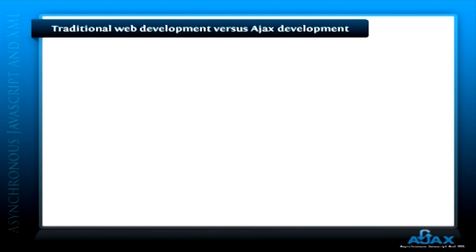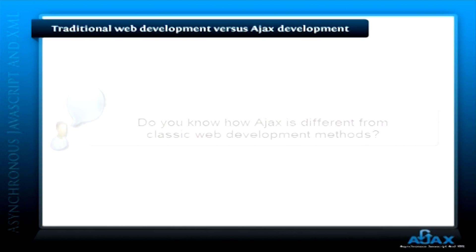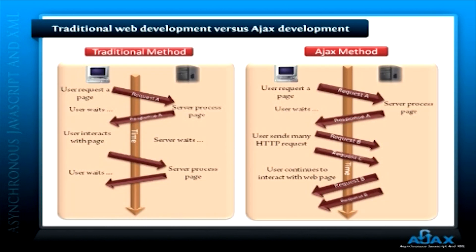In previous tutorials, you would have got a good idea about Ajax — about how it works and what the process that goes behind it is. But do you know how Ajax is different from our classic web development methods? This is the diagrammatic representation of classic web applications, and this is Ajax's web application model. Let's discuss the classic web application model first.